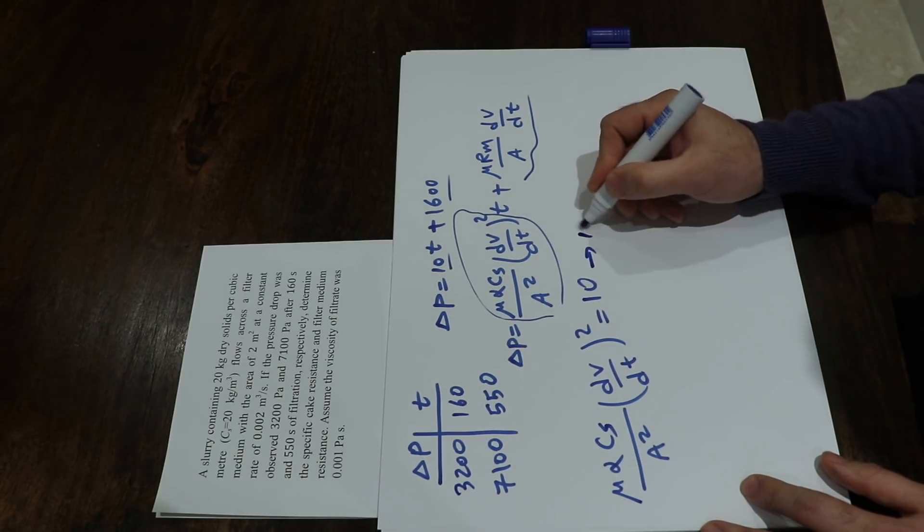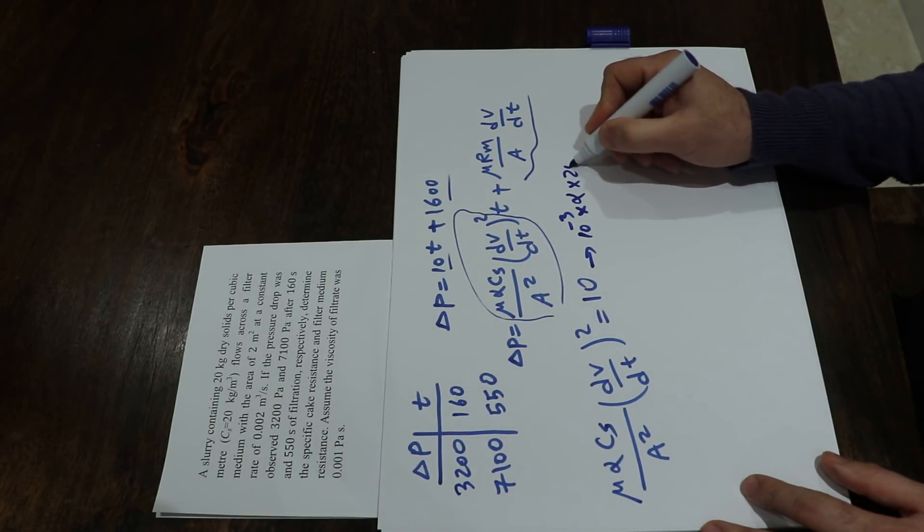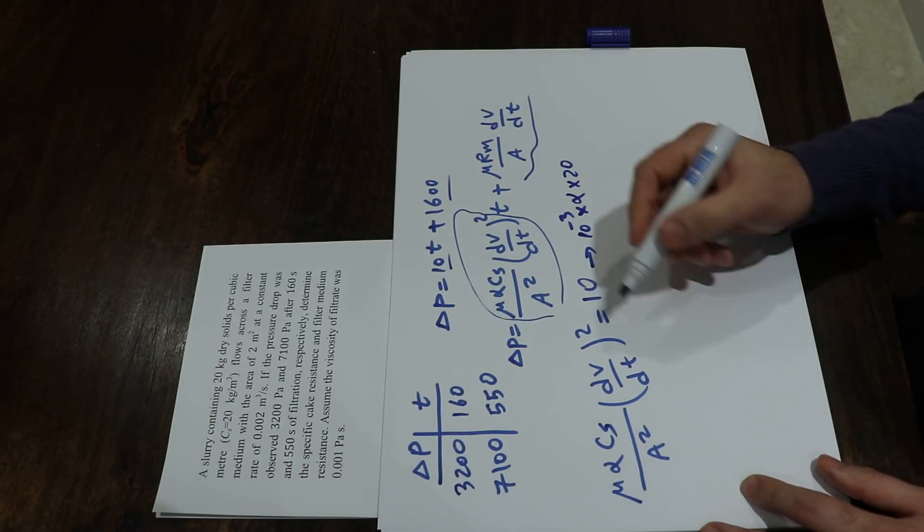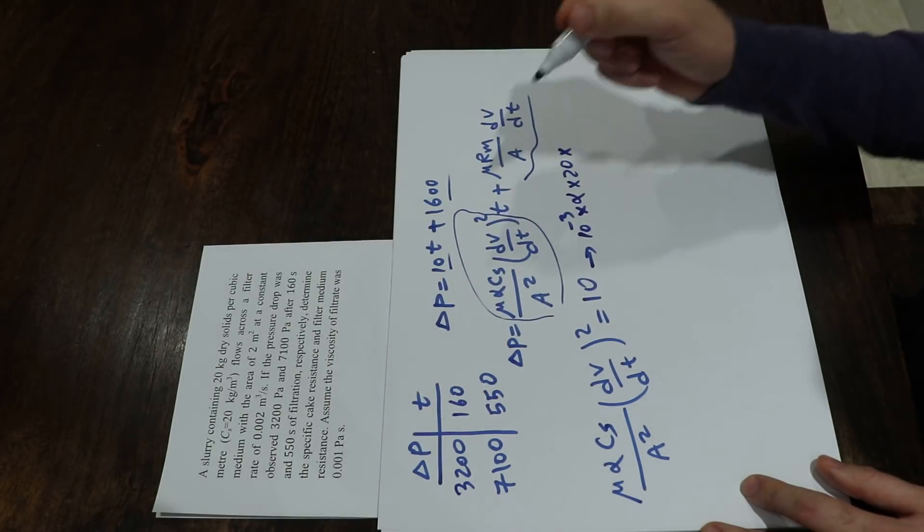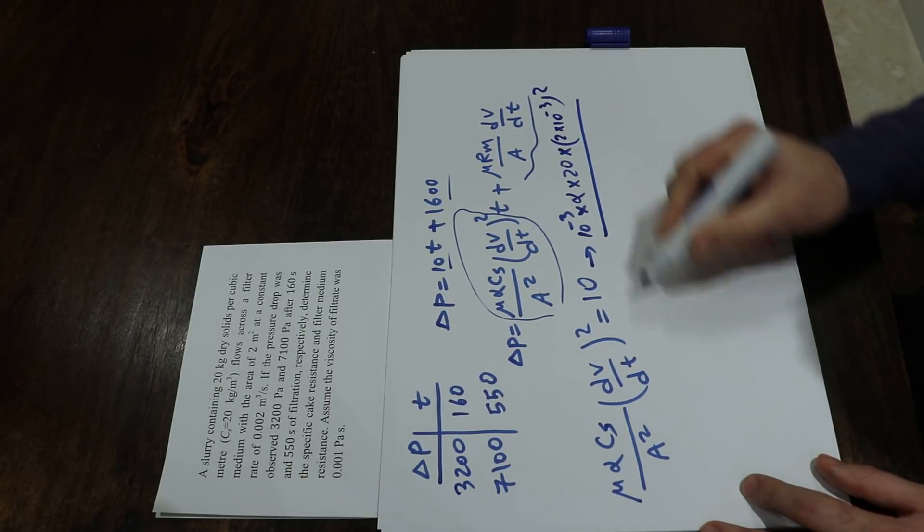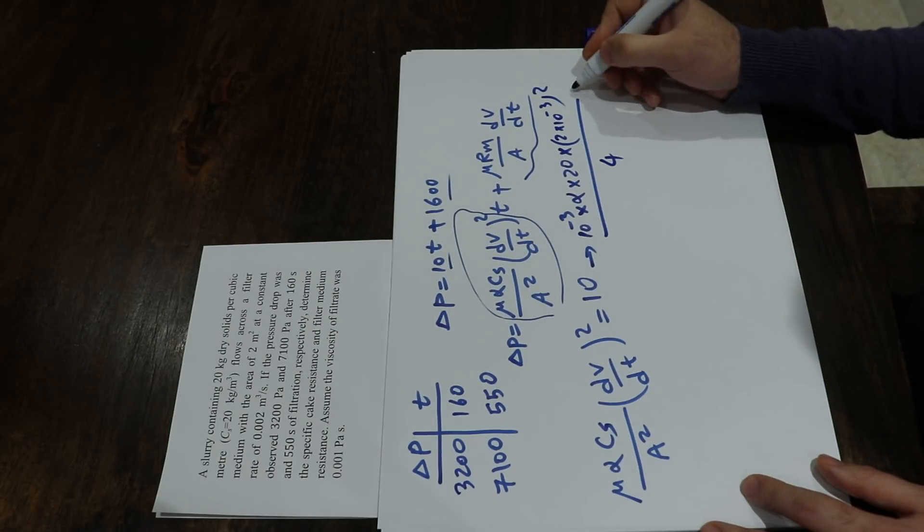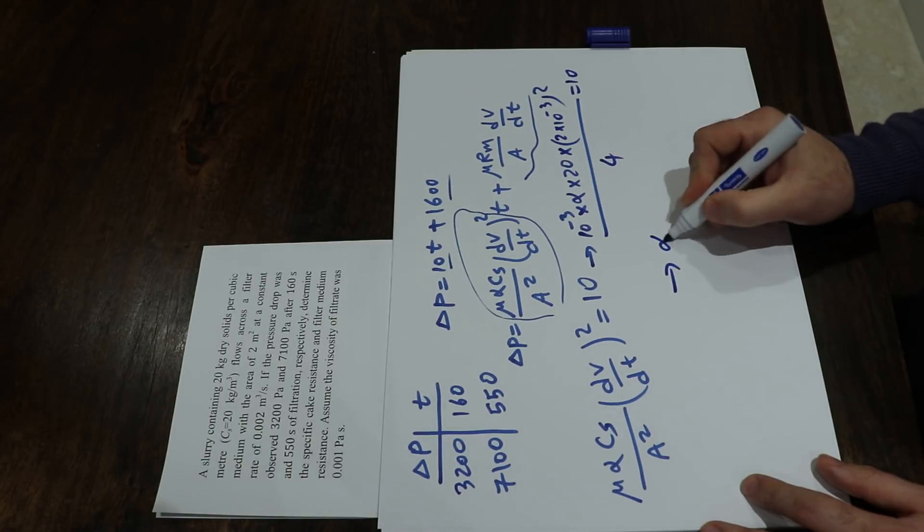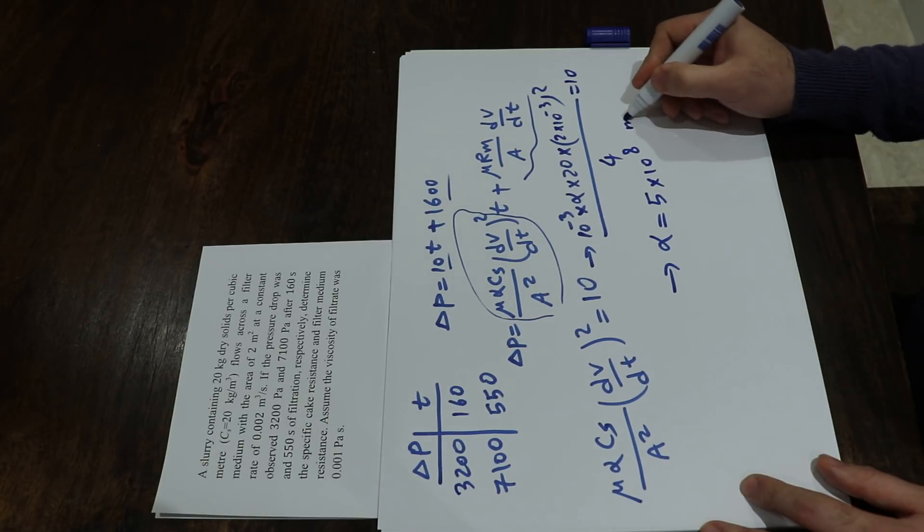you get instead of mu, I put 10 to the minus 3, times alpha which is the unknown, times Cs that is 20, times the rate with the power of 2, which is 2 times 10 to the minus 3 with the power of 2, divided by A squared. A is 2 meters, so A squared will be 4. That should equal 10. And from this equation, you can calculate alpha equal to 5 times 10 to the power of 8 meter per kilogram.